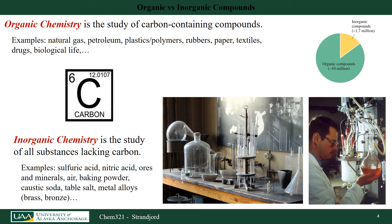Organic chemistry is the study of carbon-containing compounds. Some examples are natural gas, petroleum products, polymers, plastics, rubbers, paper, textiles, drugs, and all those biological chemicals in biochemistry. If we looked at the number of organic molecules that we've either synthesized or isolated, there are over 10 million organic compounds known right now, and there are a lot more yet to be discovered.